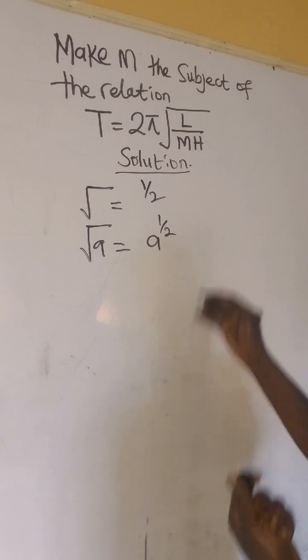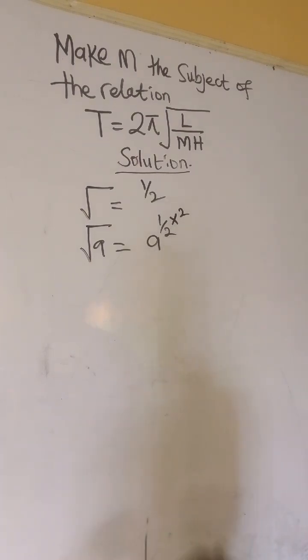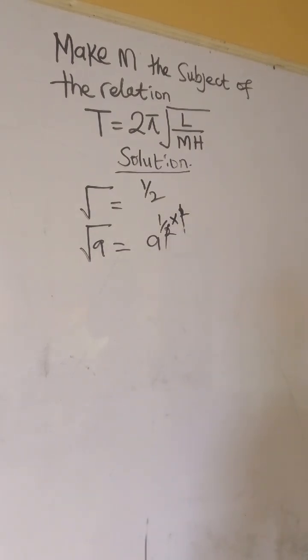So if I square both sides, that means I multiply both sides by the power of 2, such that these 2 will cancel these 2. That's what we're trying to do here.